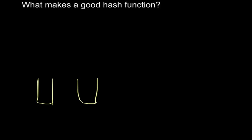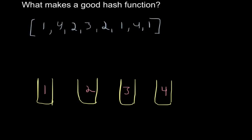So we have bucket 1, bucket 2, bucket 3, and bucket 4. If we were to have a set of data - say we have an array made up of just these four items - we have 1, 4, 2, 3, 2, 1, 4, 1. This is our array.